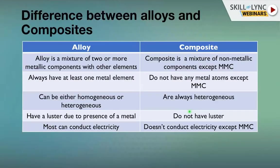An alloy is a mixture of two or more metallic components with other elements. Composites are a mixture of non-metallic components, except for Metal Matrix Composites, which always have at least one metal element. To qualify as an alloy, metal elements are required, but not in composites generally. The matrix in MMC is a metal. Alloys can be either homogeneous or heterogeneous.